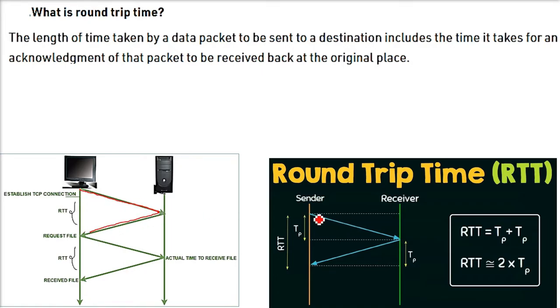That is, if you are going somewhere and coming back, that is the round-trip time. For example, T_p is the time for one hop, and coming back is another hop, so 2T_p is the round-trip time.